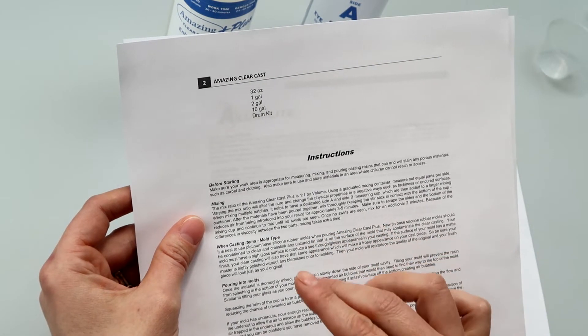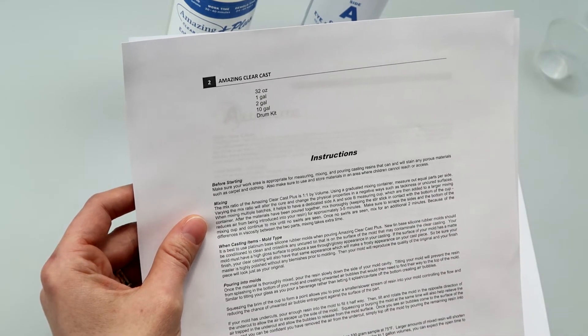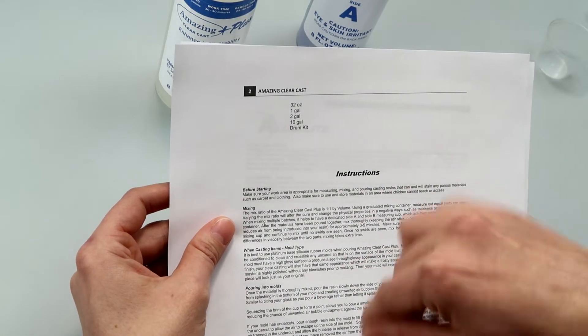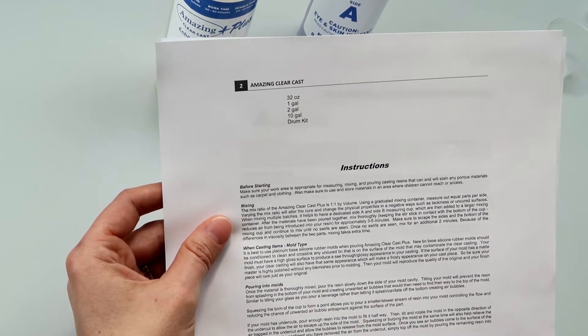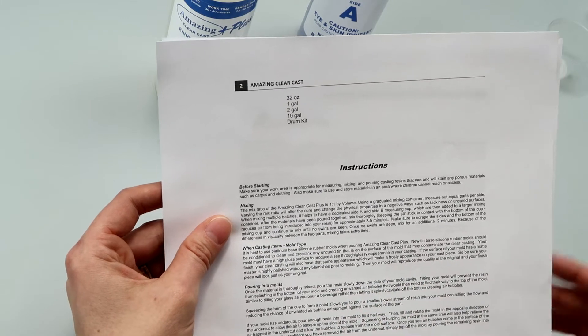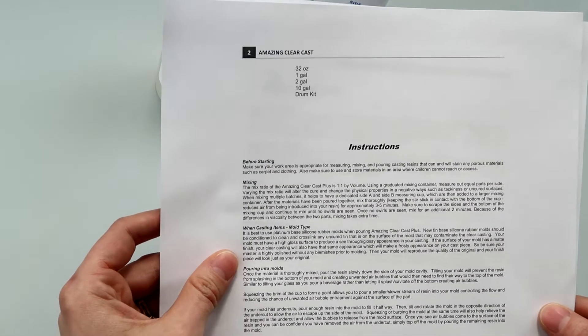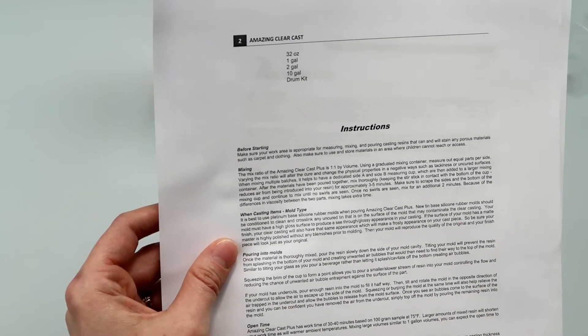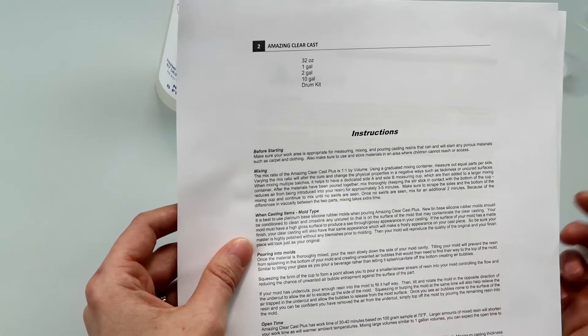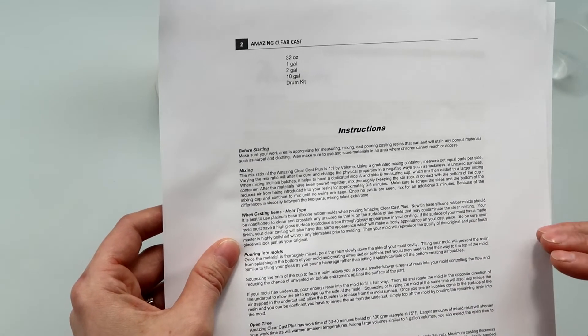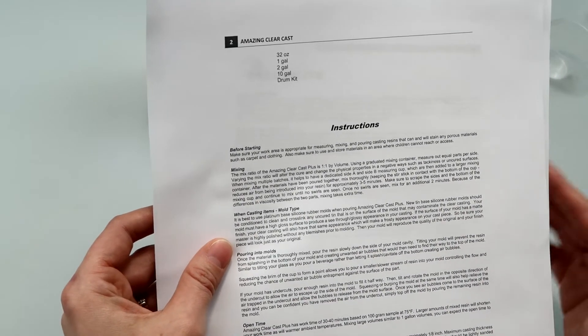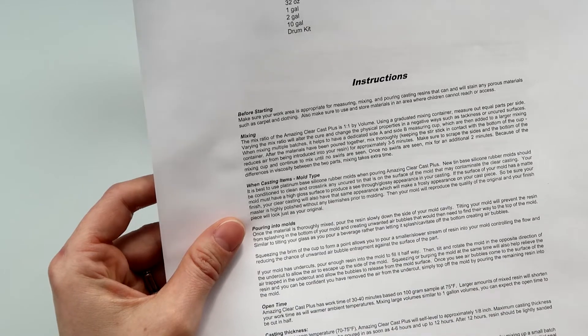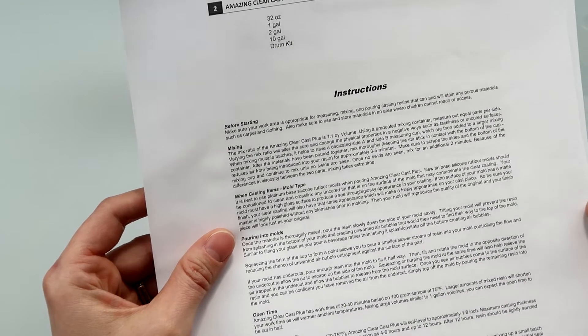So we're going to mix for three to five minutes. They want me to keep the stir stick in contact with the bottom of the cup, which reduces air from being introduced into your resin. So I'll be mindful of that. I have a tendency to pull the stick out of the resin and scrape the sides, so I'm going to make sure to just keep it in there. This isn't terribly relevant to us but I appreciate that they pointed this out. It's about working with molds, and they're saying if the surface of your mold has a matte finish, the piece that comes out of it is going to be frosted. I've actually had people ask questions about how come my pieces are popping out of the mold shiny and those were not. It's because the inside of the mold is shiny. If the inside of your mold isn't shiny, any resin pieces that pop out are not going to be. Amazing Clearcast Plus has a work time of 30 to 40 minutes based on a hundred gram sample at 75 degrees. Larger amounts will shorten the time. It's a heat reaction. The hotter the product is, the faster it's going to move.